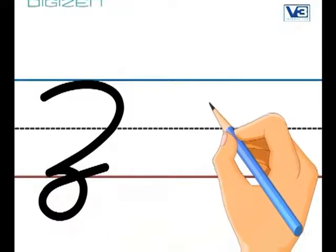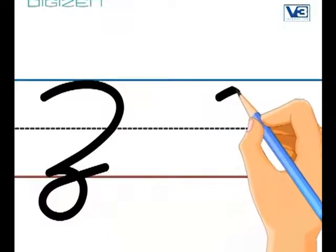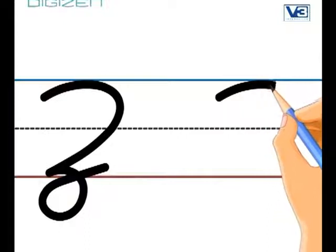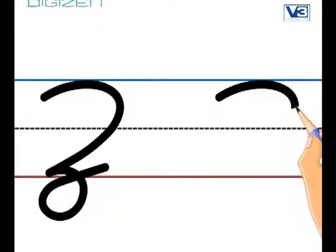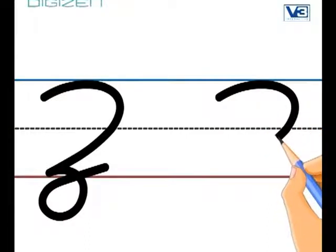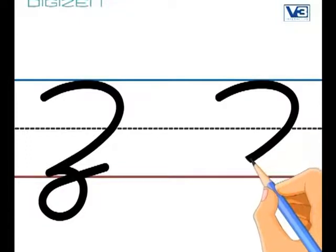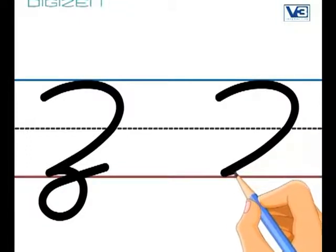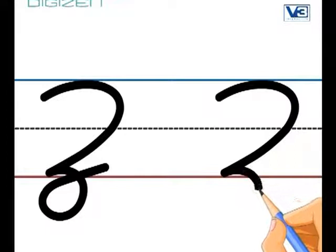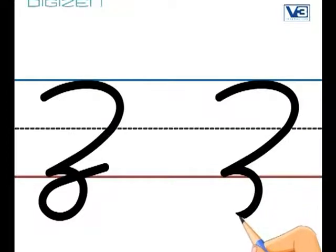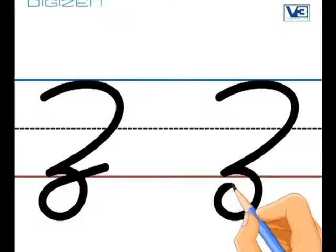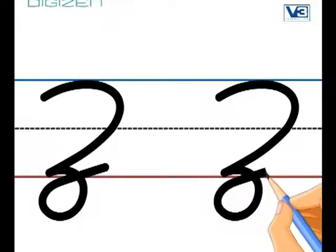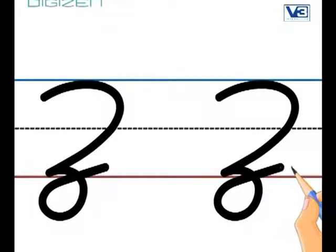Now you try it. Go up to that top line, come down to that bottom line. Now up and below that bottom line to do your loop under where you started it, and cross it at that bottom line to finish your Z.